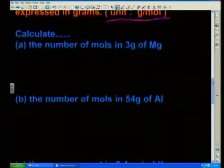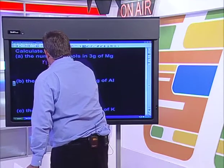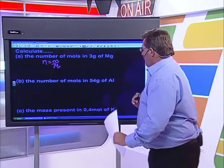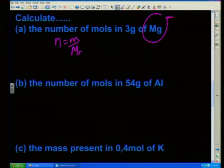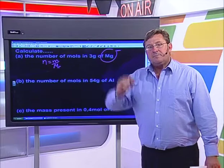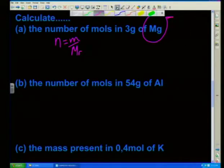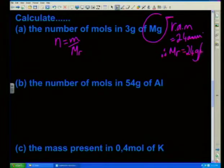When we get to looking at some calculations, let's work this out. Calculate the number of moles of three grams of magnesium. Whenever we do these calculations, we always write down our base formula: N is equal to little m over Mr. We need to look up the relative atomic mass of magnesium. The relative atomic mass of magnesium is equal to 24 amu, therefore the molar mass must equal 24 grams per mole.